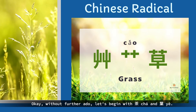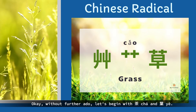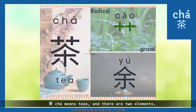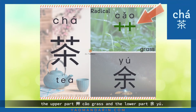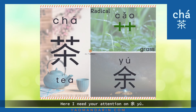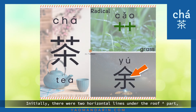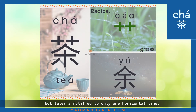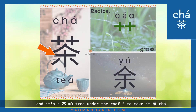Let's begin with 茶 and 葉. 茶 means tea and there are two elements: the upper part 草, meaning grass, and the lower part. Here I need your attention — initially there are two horizontal lines under the roof part, but later simplified to only one horizontal line, and it's a 木 (tree) under the roof to make it 茶.